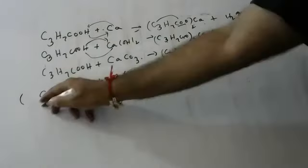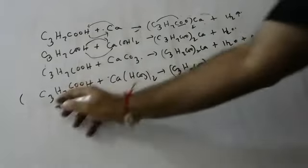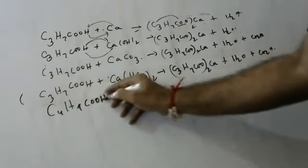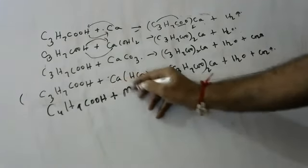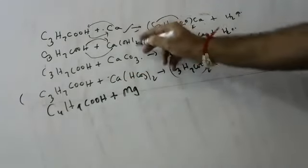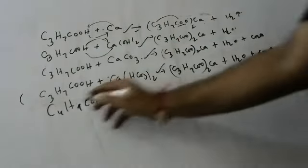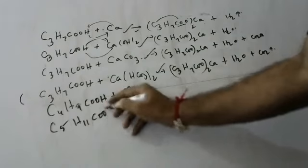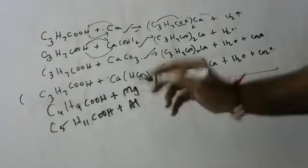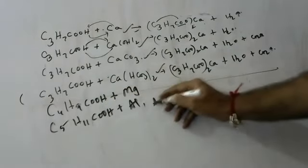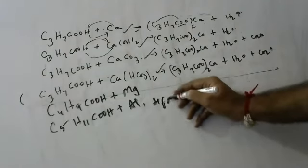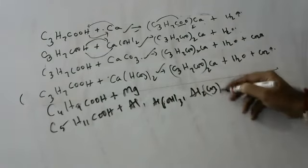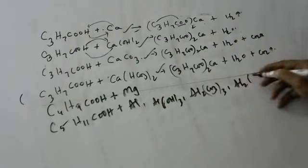You can practice with C4H9COOH, and then next C5H11COOH with aluminium, aluminium hydroxide, aluminium carbonate, and bicarbonate — like that you have to practice children. How much you practice, that much stronger you are becoming. Practice with magnesium, magnesium hydroxide, magnesium carbonate, magnesium bicarbonate.